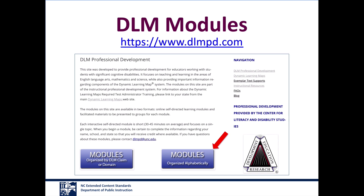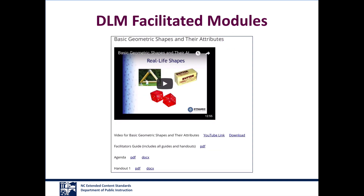You can choose the online self-directed modules if you are working individually. You will need to register each time you take a module, but registration is free, and at the completion of each module, you will receive a certificate of completion through email. The facilitated modules are intended for group workshops or communities of practice. They provide users with a video of the content, video transcripts, facilitator guides, agendas, handouts, and pre- and post-learner assessments. The Department of Public Instruction does not provide CEUs, but leaves the decision to individual districts. There is a PDF with all of the information needed to provide CEUs should the district so choose.